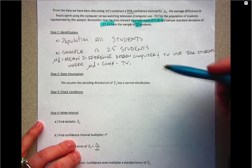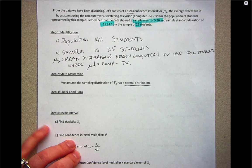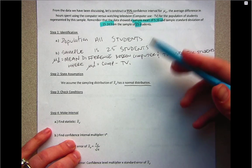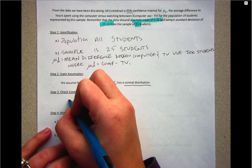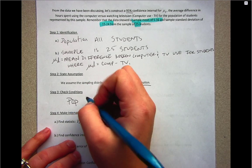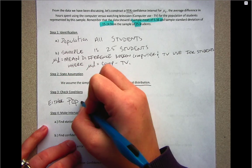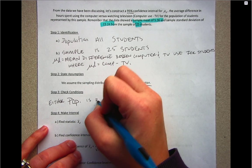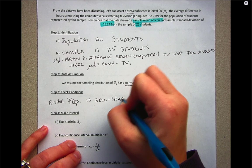Next, we assume the sampling distribution of x̄_d is normal. Given the formulas we're using, we have to make this assumption and verify it. You can do this either based on the population's shape—if the population is bell-shaped—or based on the size of the sample.